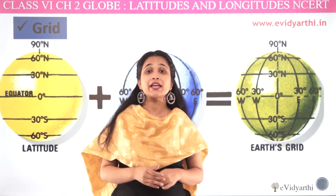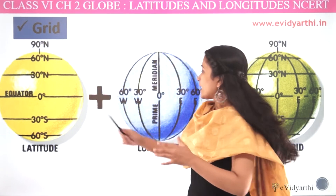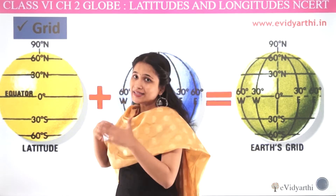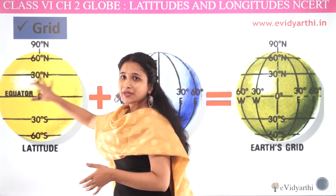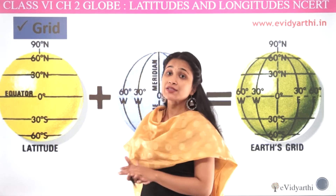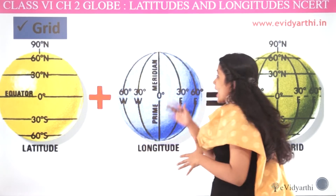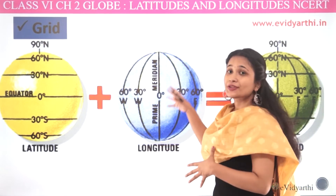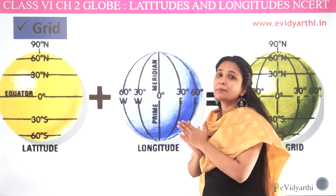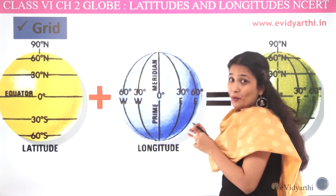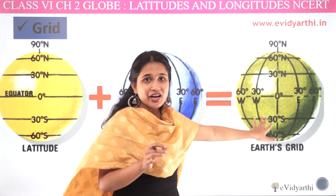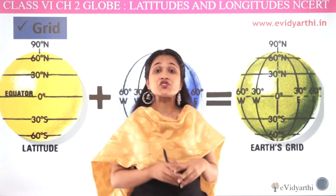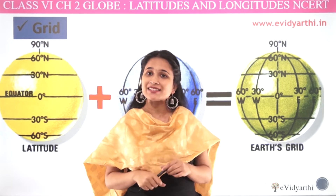In this video, we will talk about that. Latitudes are parallel lines — the equator and lateral lines — and our longitudes are long lines. Now, when we mix them together, it is a grid formation. With this grid, we will understand how we can find the location of any place.